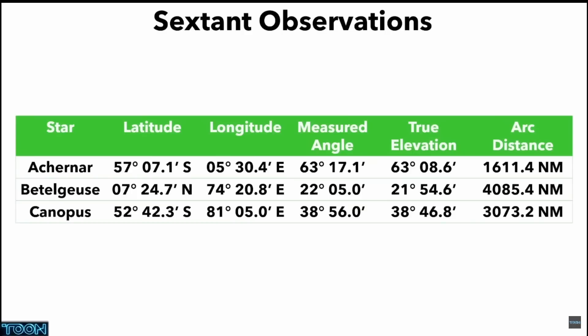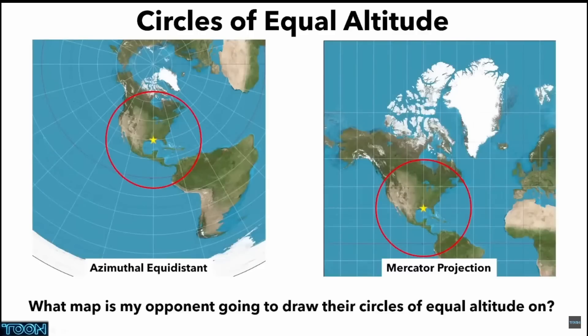use 60 nautical miles per degree. And that will give you the distance you are from each of the GPs.